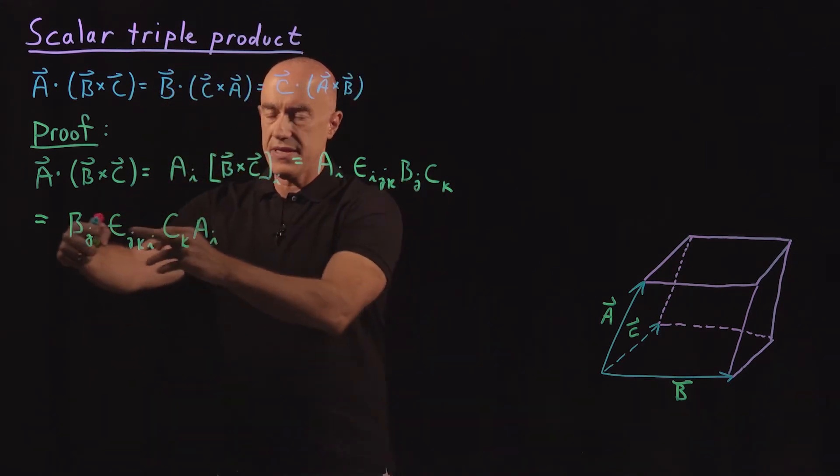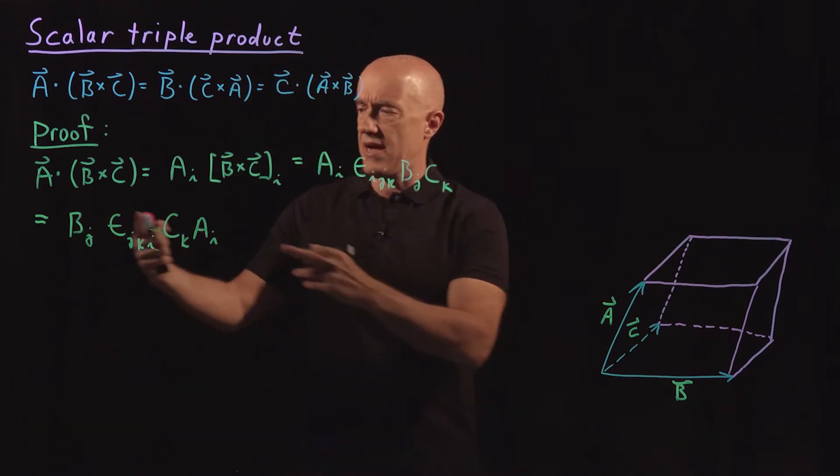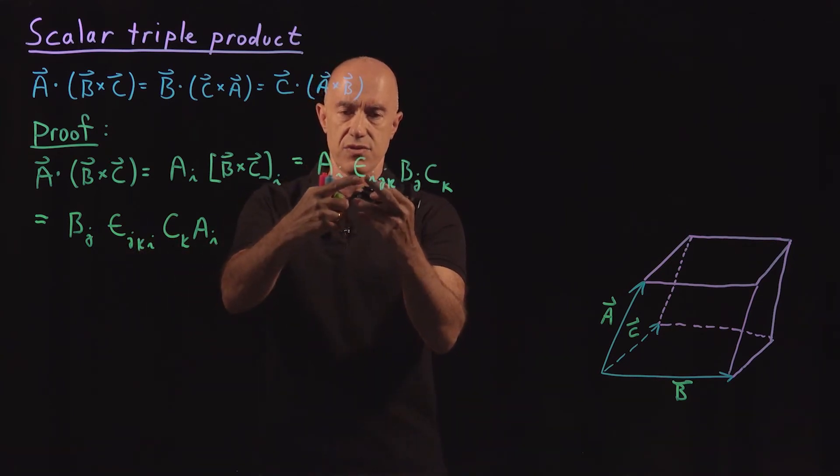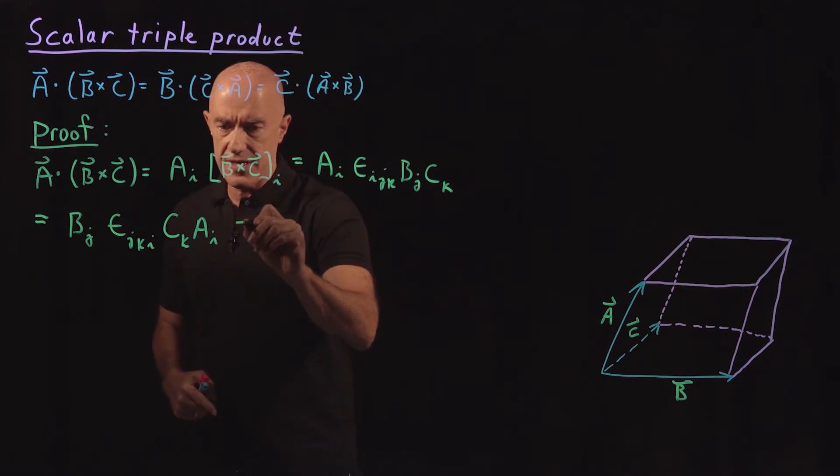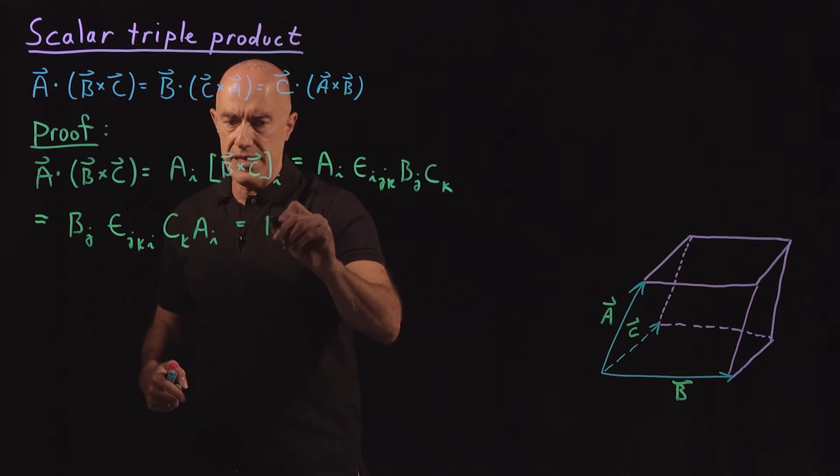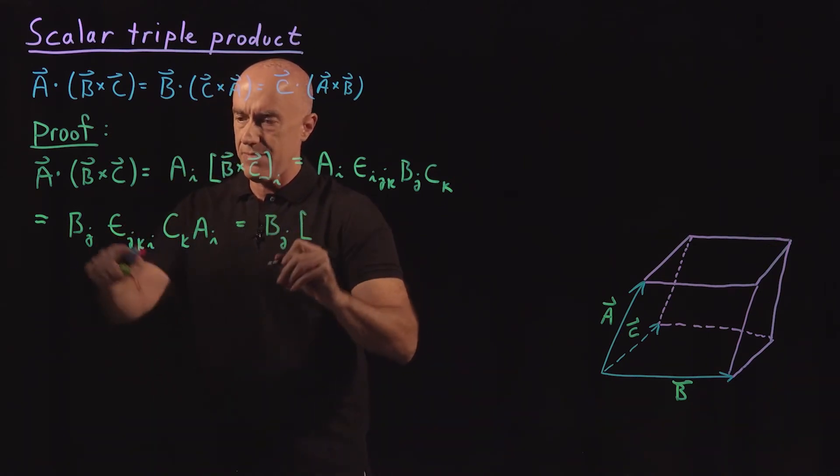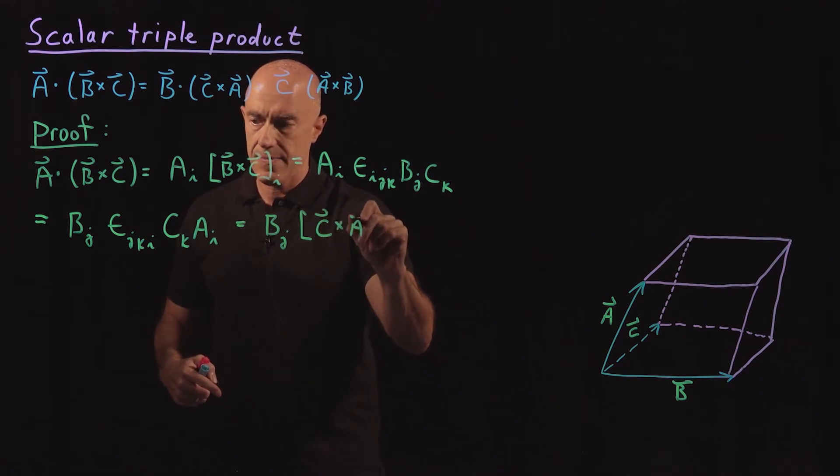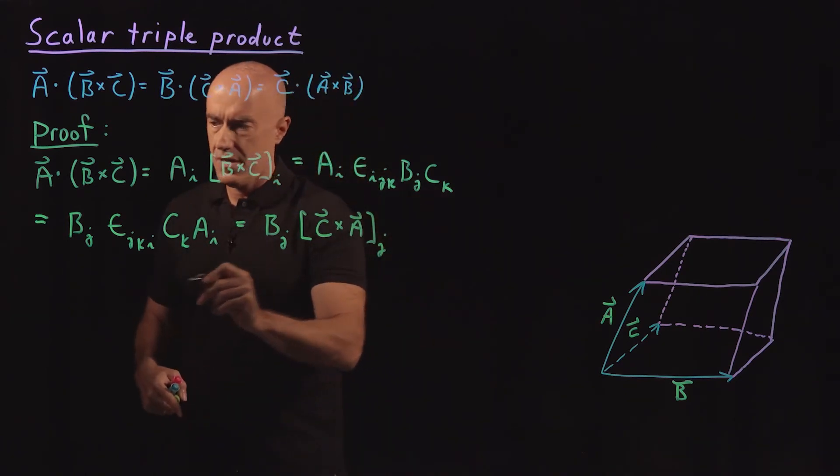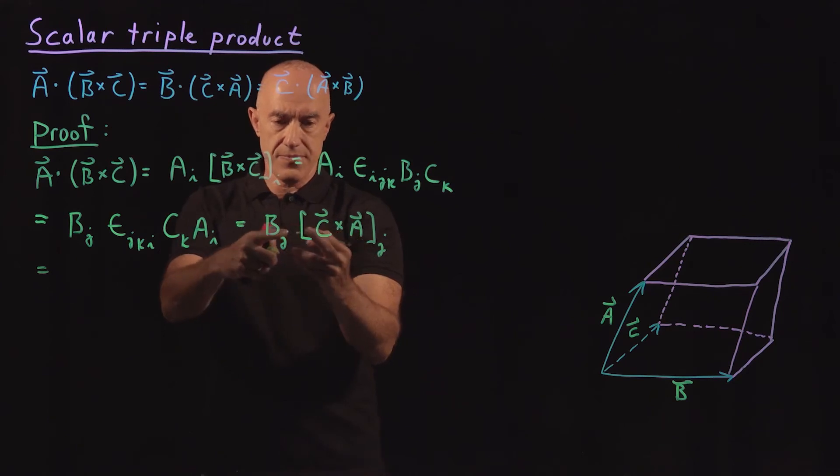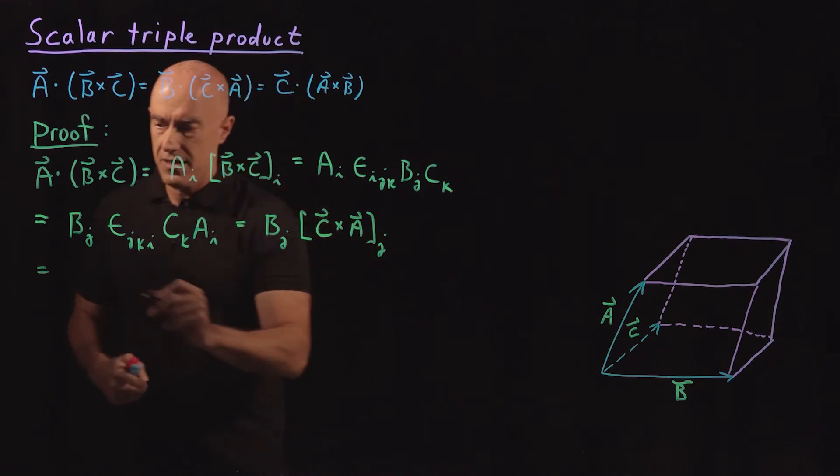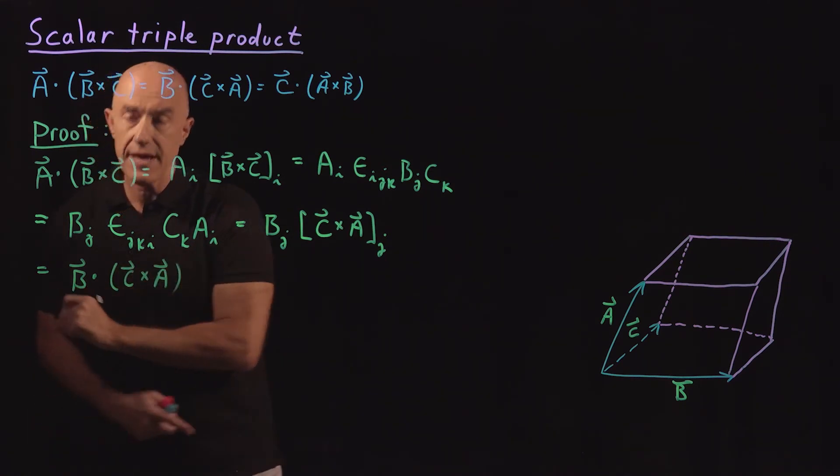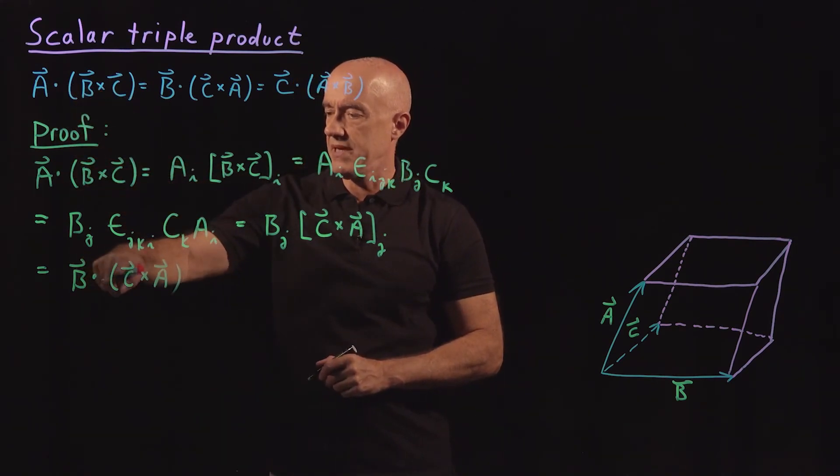So all I've done here to get to this step here, we know that numbers commute so I'm allowed to change the order of the symbols for A, B, and C. But the big step here is that Epsilon J, K, I is equal to Epsilon I, J, K. If we look at this, this is just a dot product. So this is B_J times, if I write, use this same notation, Epsilon J, K, I, C_K, A_I is C cross A. So that got us from A dot B cross C is equal to B dot C cross A.